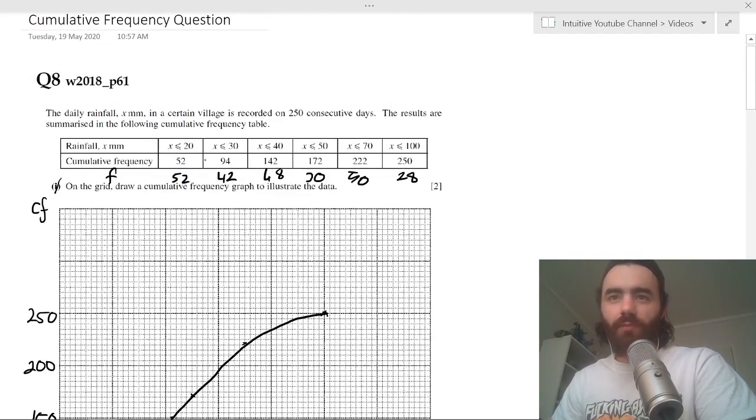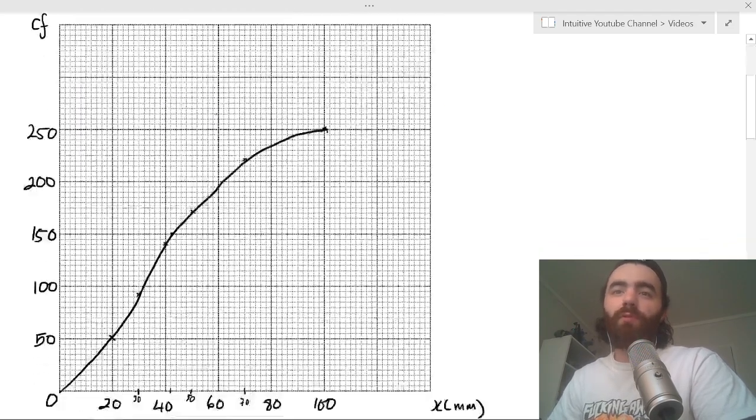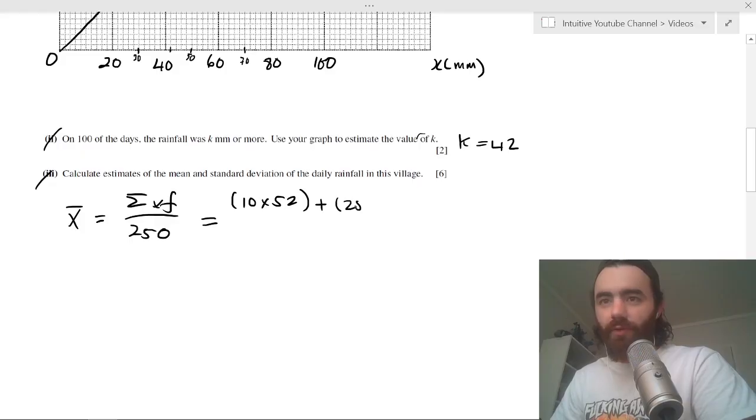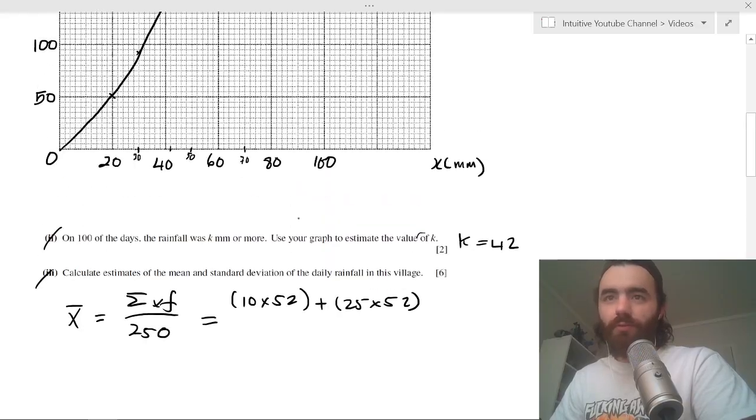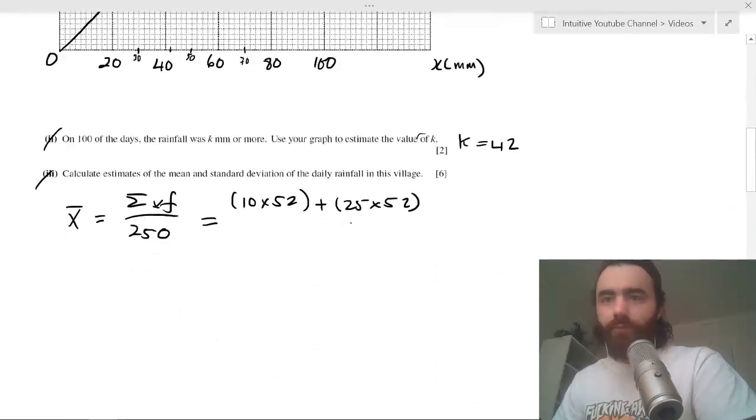So the first one will be 10 times 52, plus the next one - the middle between 20 and 30 interval, that happens 42 times, so 25 times 42.